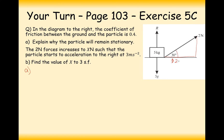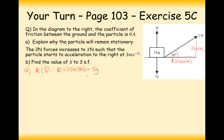The force is 2 newtons, so the horizontal component is 2 cos 30 and the vertical component is 2 sin 30. Resolving upwards and downwards with no vertical acceleration: R plus 2 sin 30 balances with 5g. Since sin 30 equals a half, 2 times a half is 1, so R equals 5g minus 1.